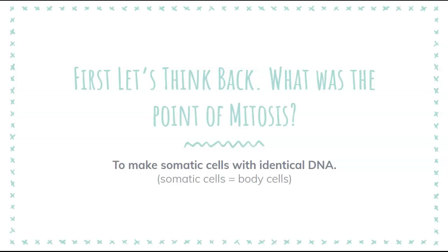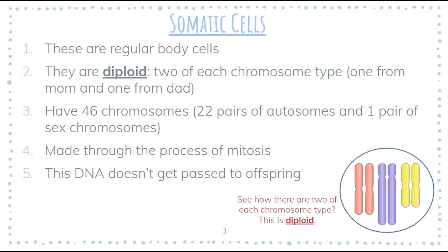Obviously the names sound similar, so they might end up being related in some way. So let's think back — what was the whole point of mitosis? At the end of mitosis, we had two identical cells with the same amount of genetic information in them. And this is how your body makes what are called somatic cells, or body cells — basically almost all of the cells in your body. But notice I said almost.